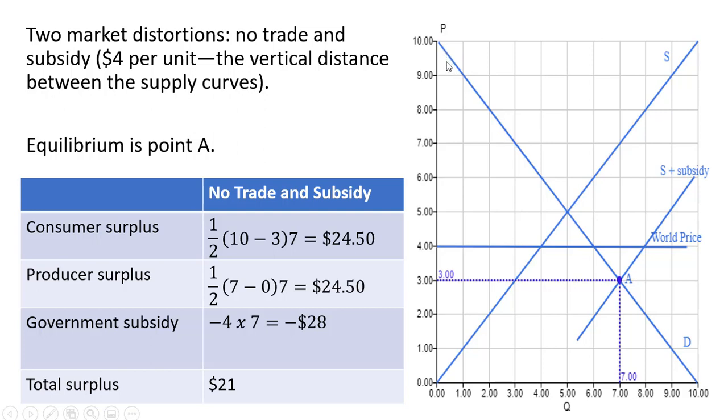And so consumers are going to be paying $3 per unit and buying seven units. So consumer surplus is going to be the difference between the height of the demand curve and the $3 that consumers pay for the good, all the way up to the last unit that consumers buy, and that's seven units. So the area of this triangle, given by one half base times height, is going to be $24.50.